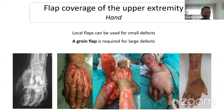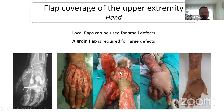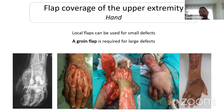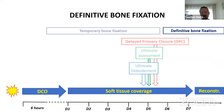For the hand it is the same principle — many local flaps are described for small defects. Even for large defects, such as a blast injury of the hand with very large defect, you can perform a groin flap to cover the hand with bone exposure. You can cover the hand and also the forearms up to the elbow. With the latissimus dorsi flap and the groin flap, you can cover large defects of all the upper limbs.